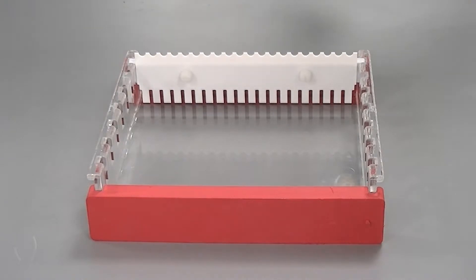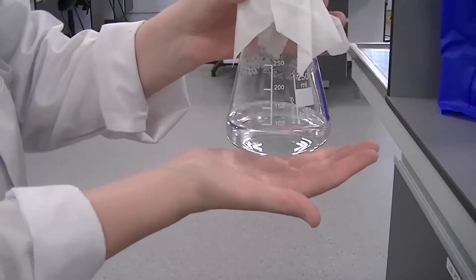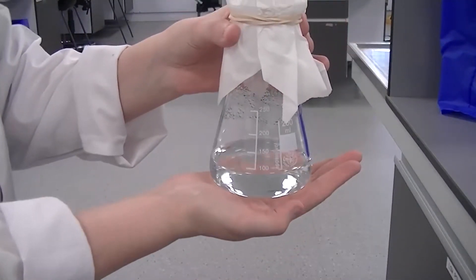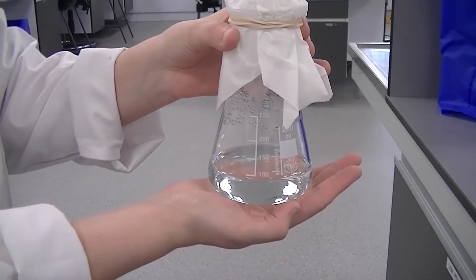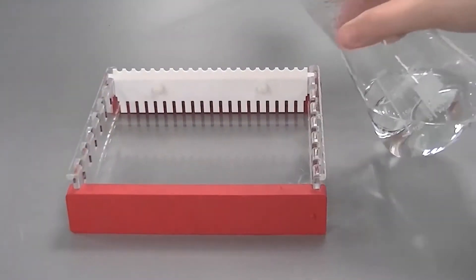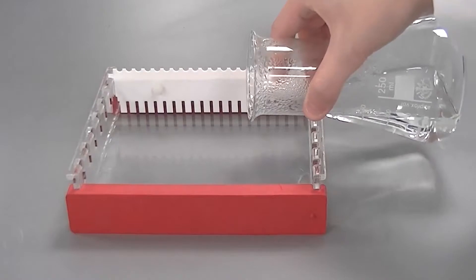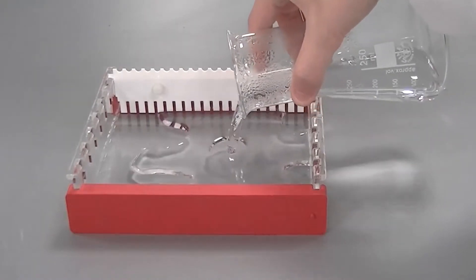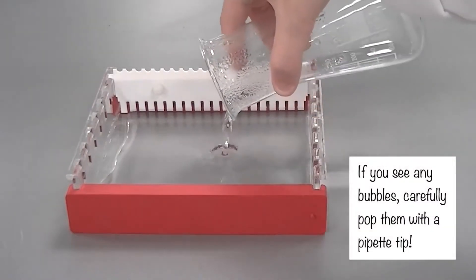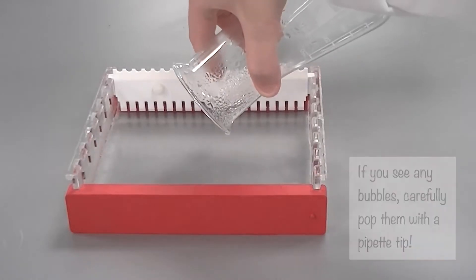The gel is ready to be poured when you can comfortably hold the bottom of the flask. Slowly pour the liquid into the casting tray, taking care not to introduce any bubbles. Then wait until the gel has solidified.